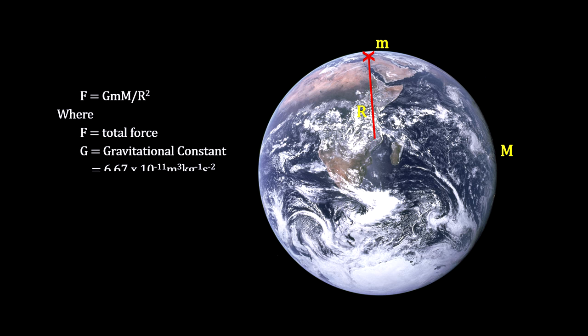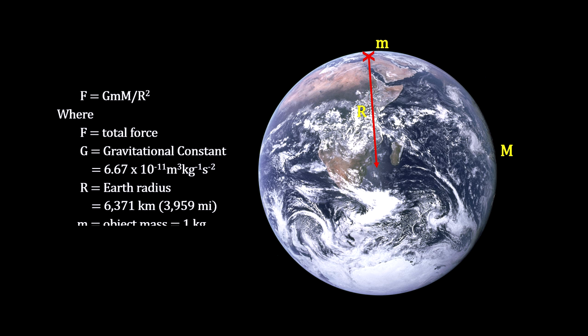It has two parts. The first is that an isotropic, spherically symmetric body affects external objects gravitationally as though all of its mass were concentrated at its center.